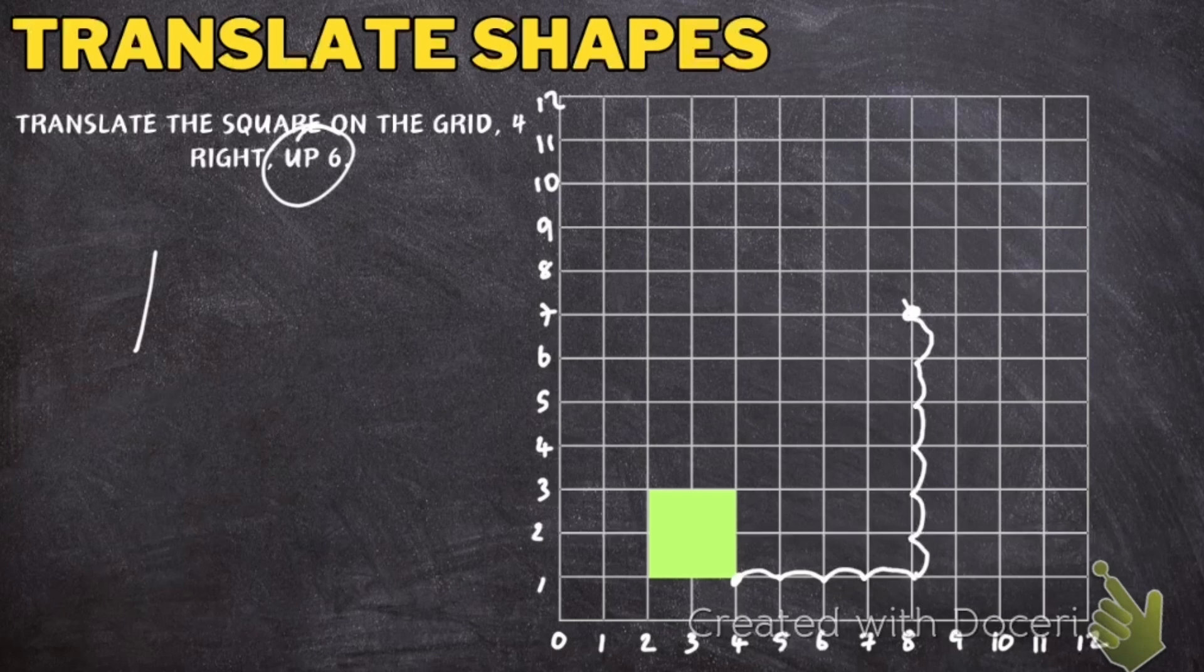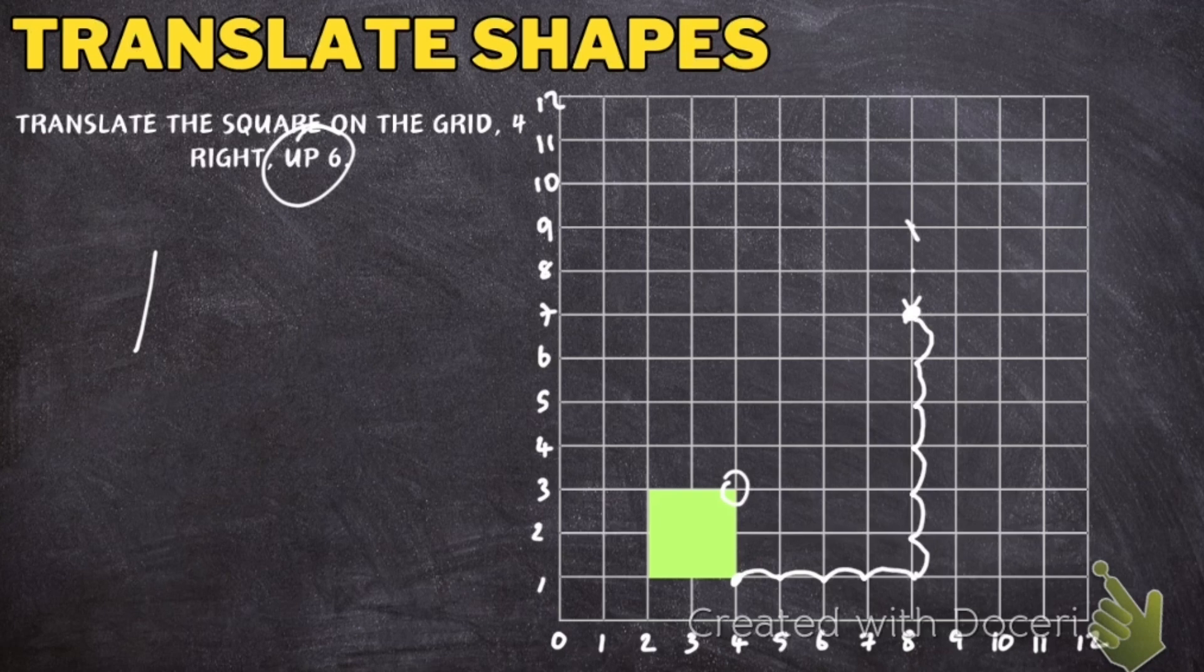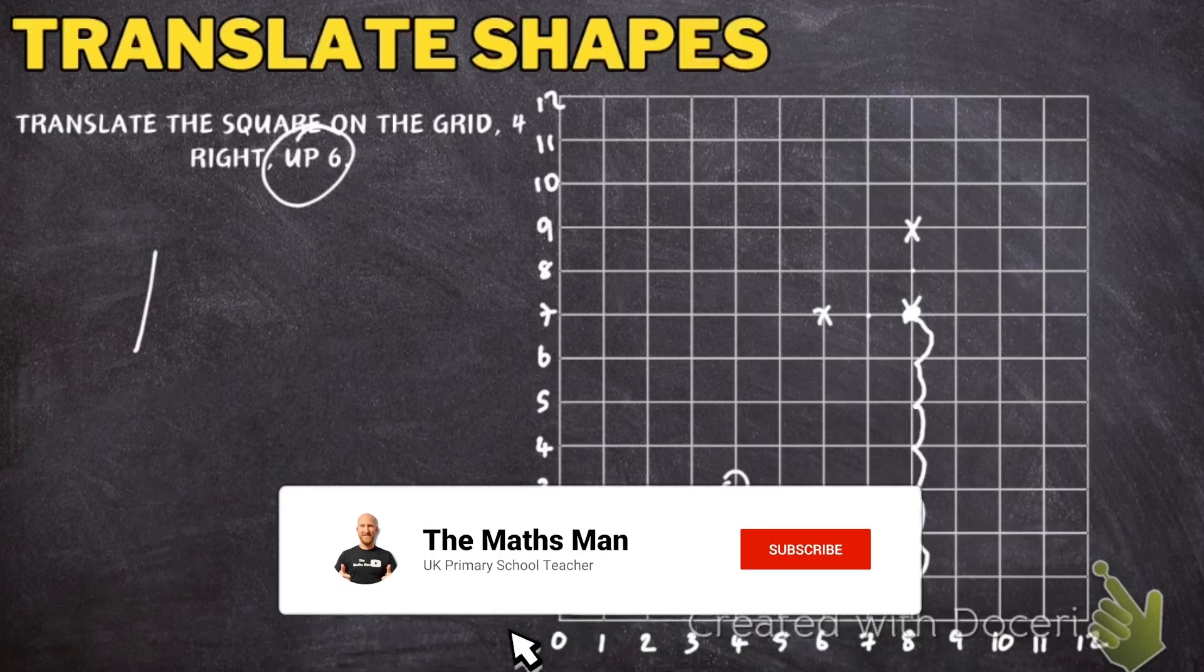So what I'm going to do is I'm just going to mark it with an X and then I'm going to consider well if the bottom right corner is there now where will this corner be. Well it'll be two squares higher, 1, 2, so it'll be here. So where will this corner be? Well it'll be 1, 2, it'll be here and then this corner will be here.